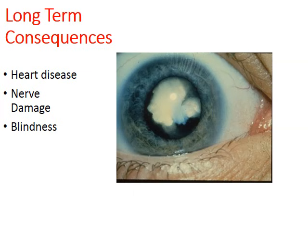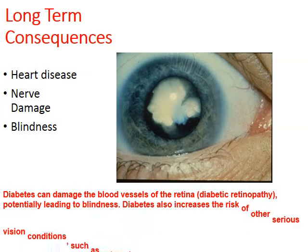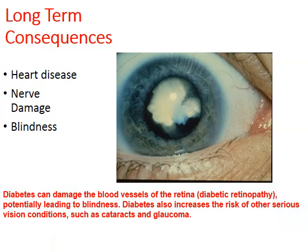Blindness is another long-term consequence. Diabetes can damage the blood vessels of the retina, potentially leading to blindness. Diabetes also increases the risk of other serious conditions such as cataracts and glaucoma — you can see a cataract in the person's eye in this picture.